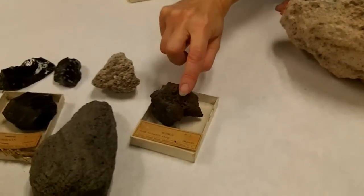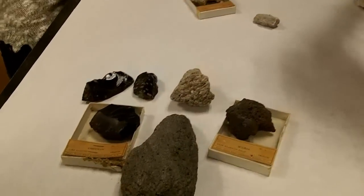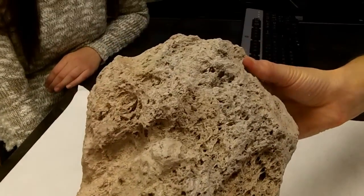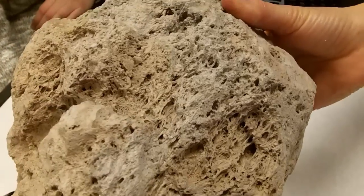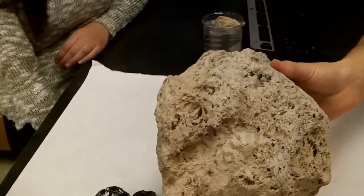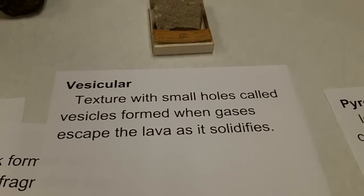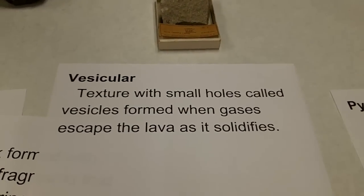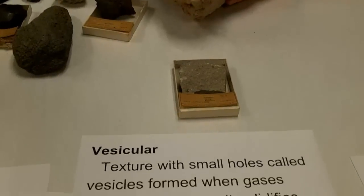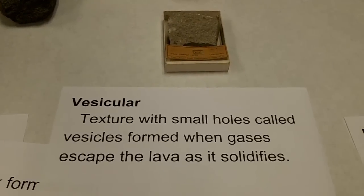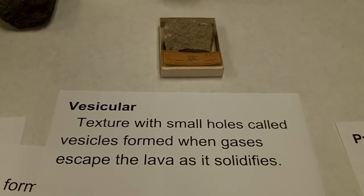When the gases escape, they leave behind these bubble holes. Sometimes the bubble holes are big, as in this rock. Sometimes they're much smaller, as in this rock. We have a special name for those bubble holes. When we are talking about rocks that have bubble holes, these are all glassy texture, but they also have bubble holes that we call vesicles. So these are glassy and vesicular. Vesicular is the texture with small holes called vesicles that are formed when the gases escape the lava as it solidifies.